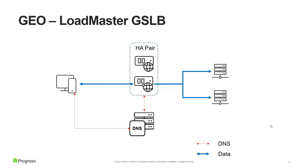There's also GEO clustering, which takes high availability and spreads it across multiple sites. When you're talking multi-site, you're talking about GEOs. When you're talking high availability on a single site, you're talking about HA.